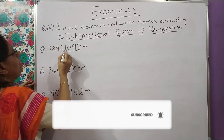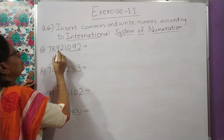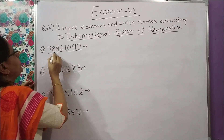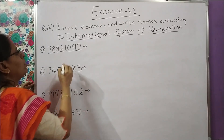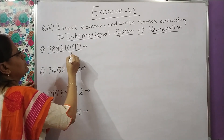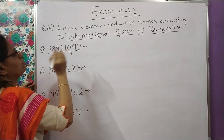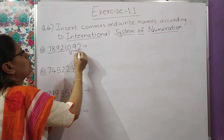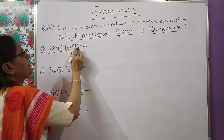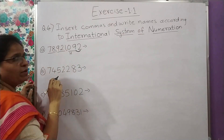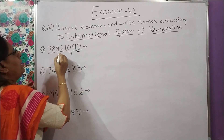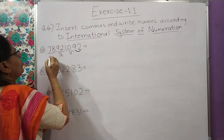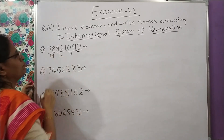Yahan par bhi one, two, three ke baad comma. Ab yahan par two bachenge, toh yeh dono saath mein. Indian system ki tarah yahan hundred likhenge, aur yeh dono saath mein read karenge — ninety two. Yahan thousand aayega, aur yahan million aayega.